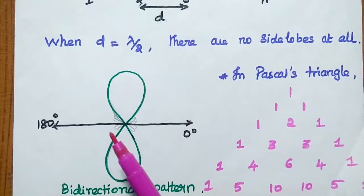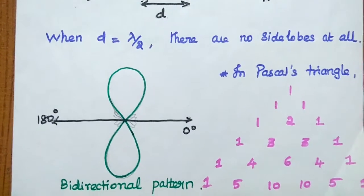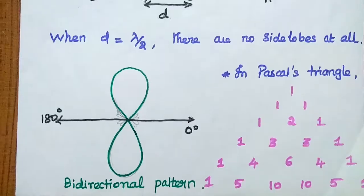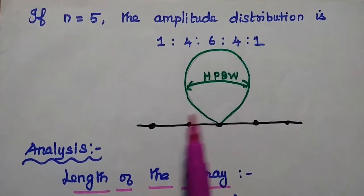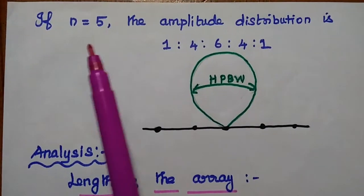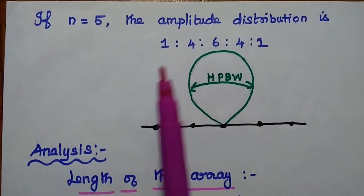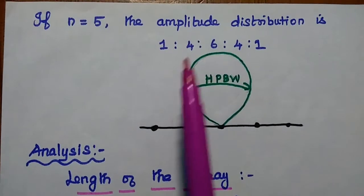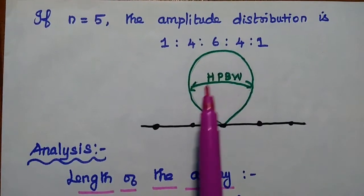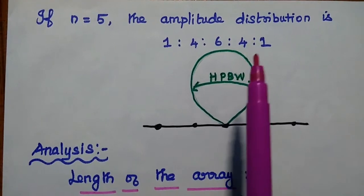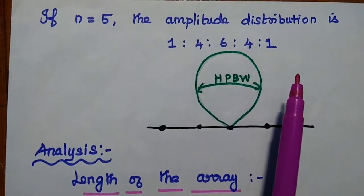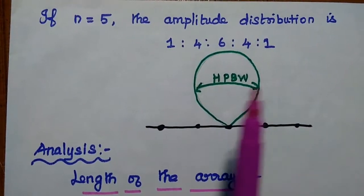Here the side lobes are getting minimized to the very low level. This is the amplitude distribution for the five element array antenna. Here we can see the radiation pattern like this. Here we can achieve wide bandwidth. If number of elements are increased, we can widen the bandwidth.